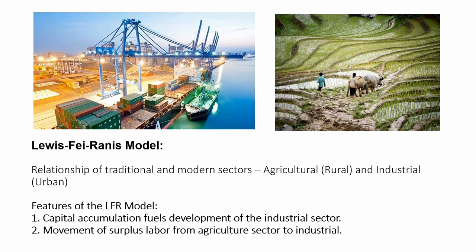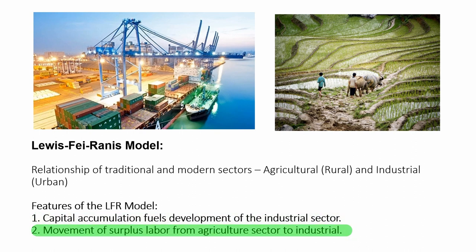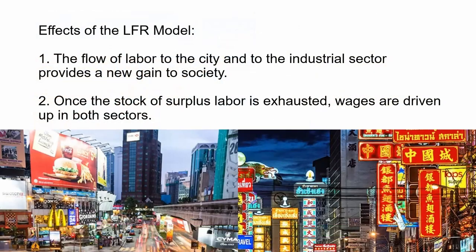Let us discuss the Lewis-Fei-Ranis model first. According to the model, the surplus workers in the rural areas will migrate to the urban areas as these workers become attracted to the development rising in the cities. The model also assumes a surplus of workers in the rural areas, meaning there is a lot of unemployment in the provinces. The rising demand for labor in developing urban areas will attract the unemployed from the rural areas to migrate to the city.